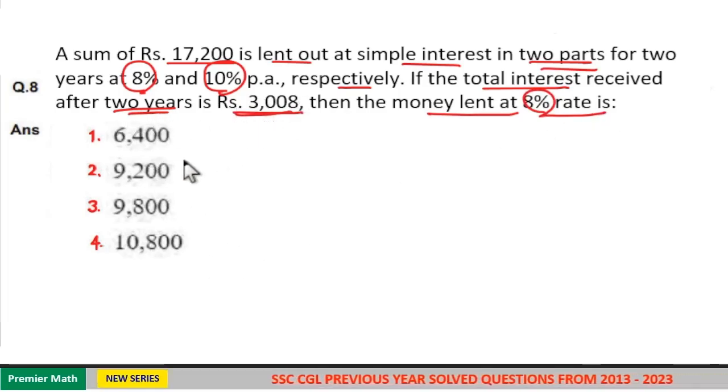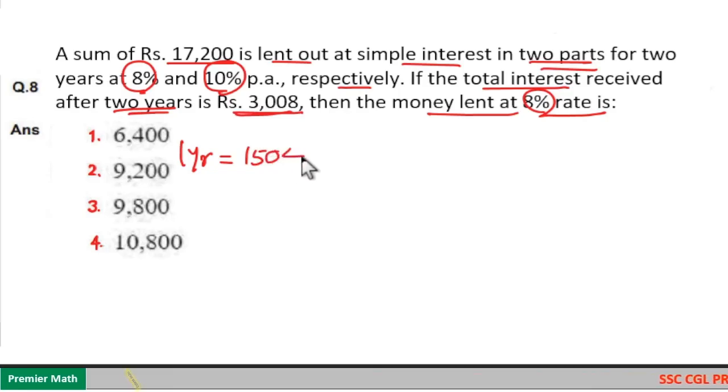Here in 2 years, simple interest received is 3,008. Then in 1 year, simple interest received is half of this. So, 1,504 is the simple interest received in 1 year.